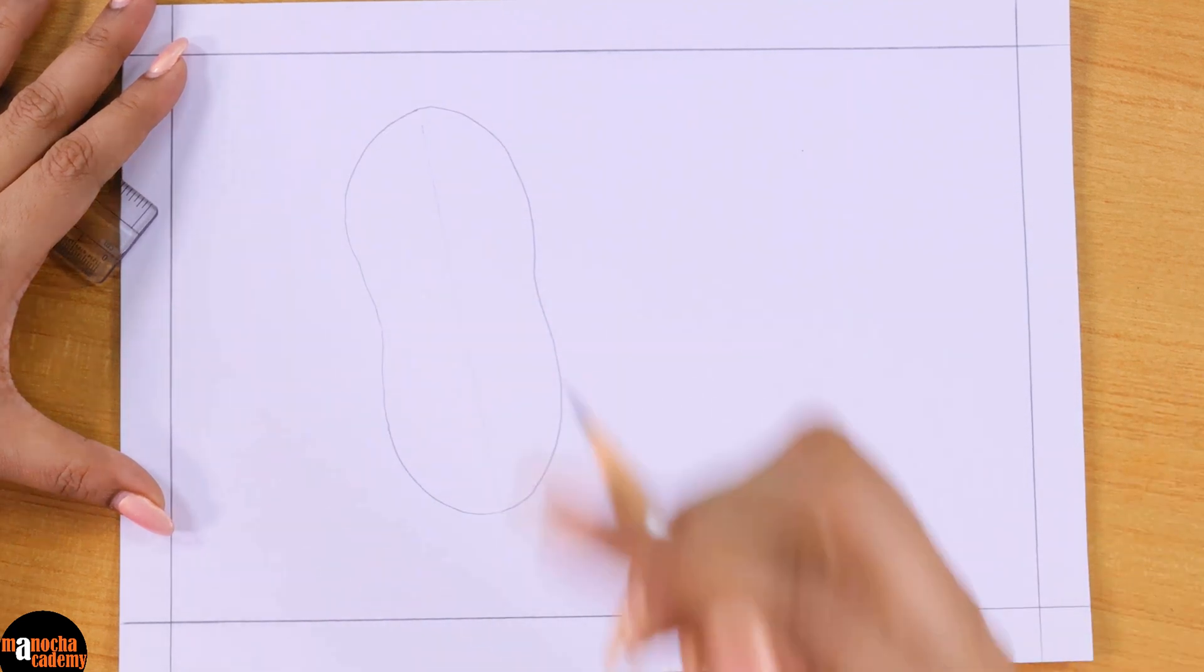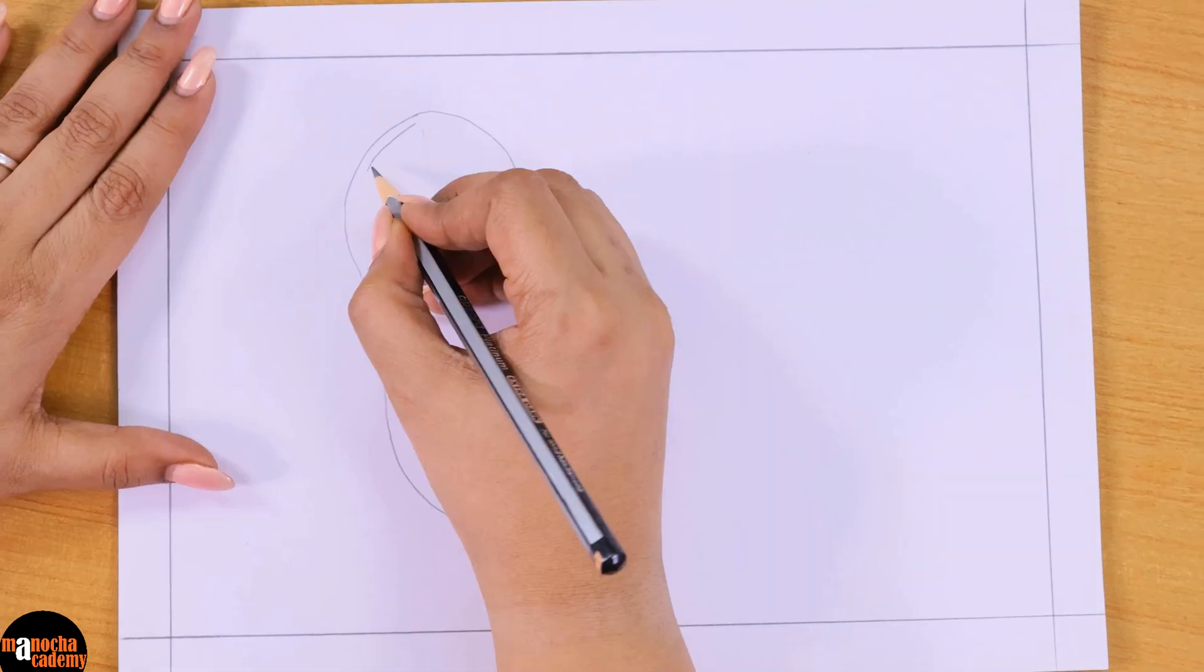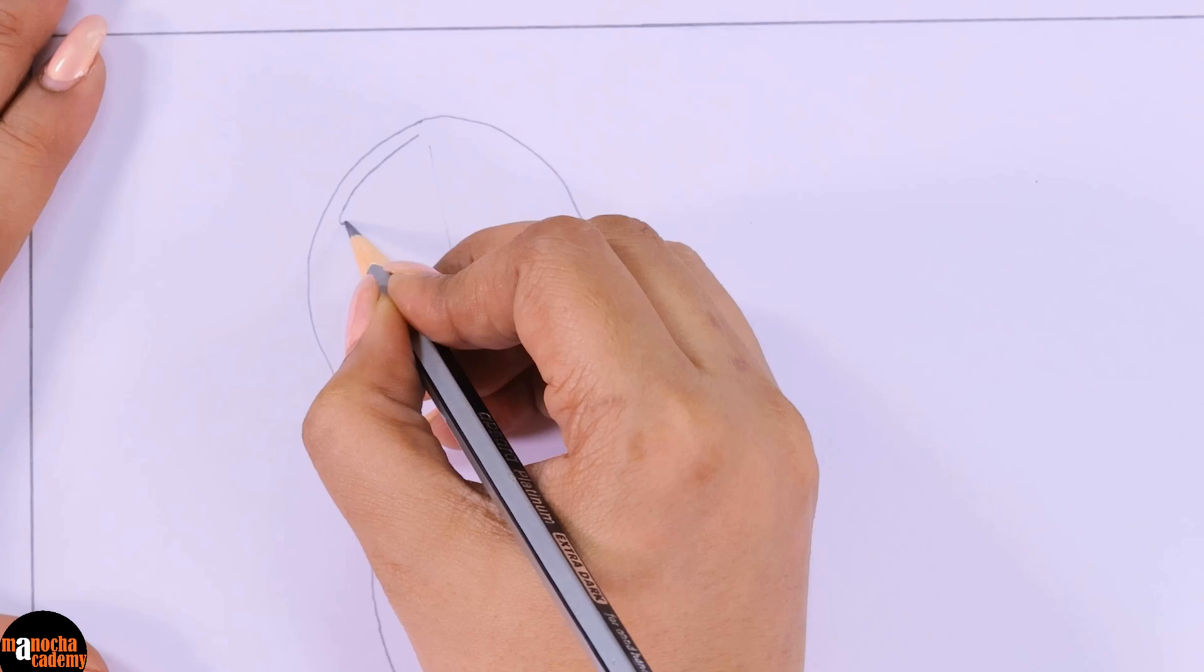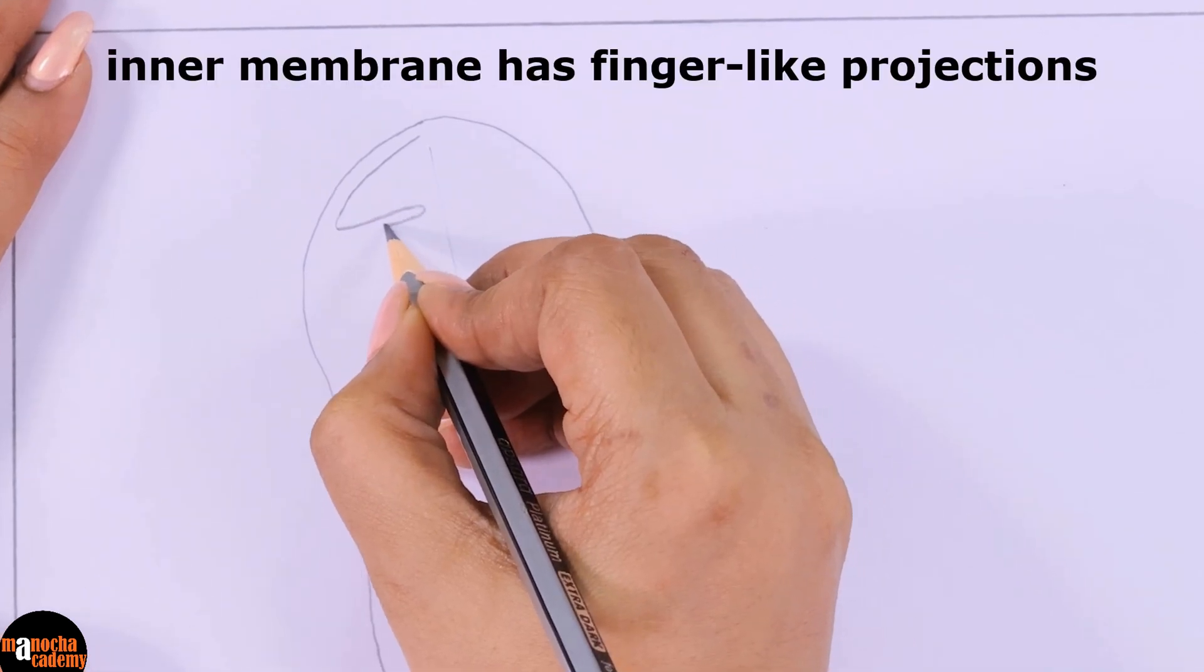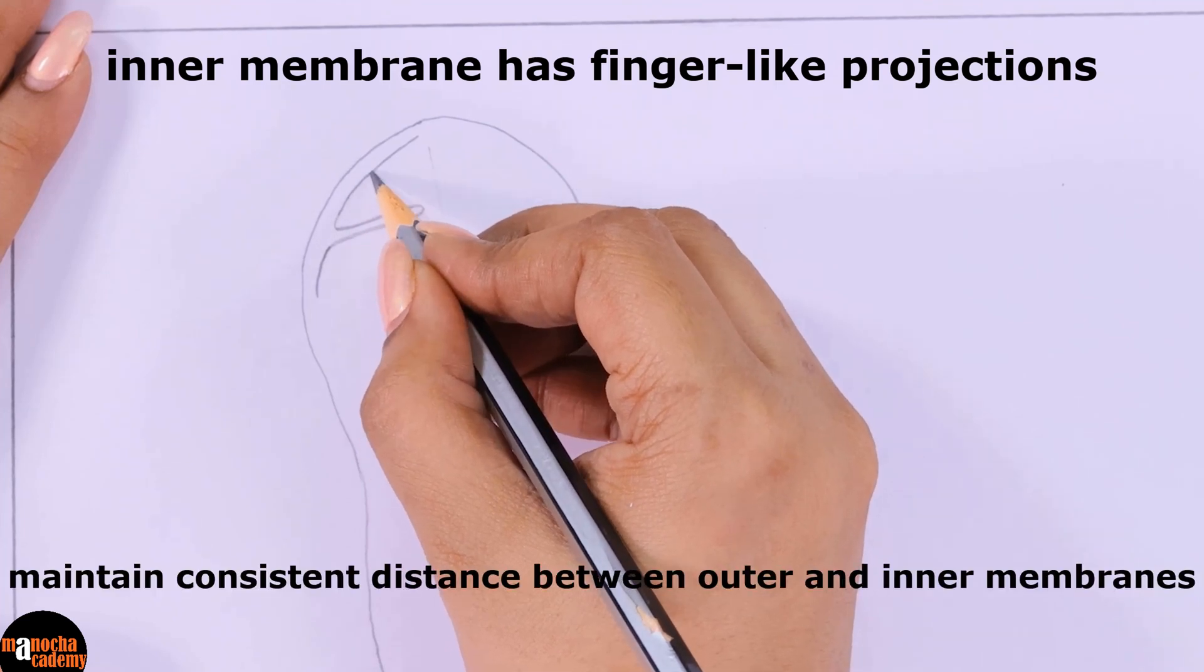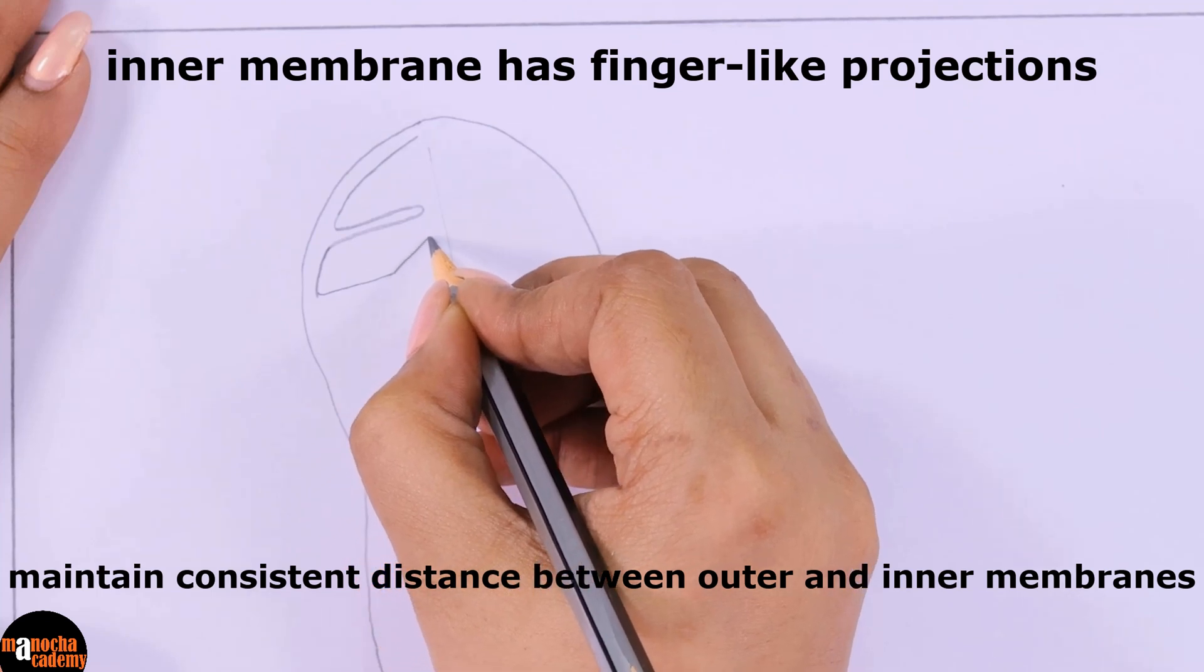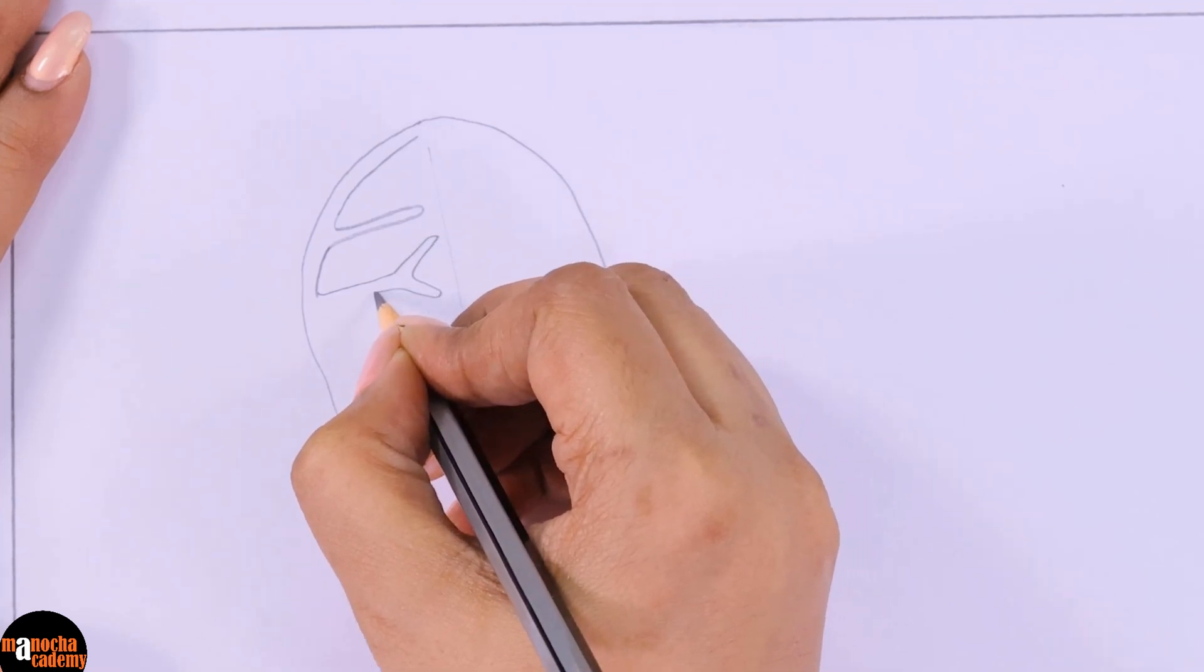This that I have drawn is the outer membrane which is smooth. Now we will have to draw the inner membrane. When you are drawing the inner membrane, it is thrown into finger-like projections. You have to make sure that the distance between the outer and the inner membrane remains the same.